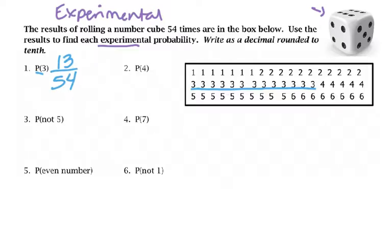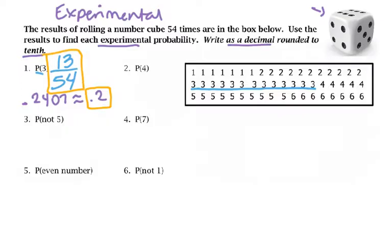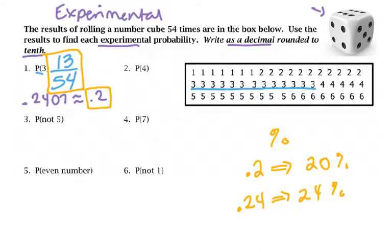There are a couple of ways to write probability depending on what the directions say. So 13 out of 54 is a reduced fraction. Another way is to use a calculator and do 13 divided by 54 and write it as a decimal. The tricky thing about decimals is figuring out where to round. If directions say round to the nearest tenth, then 0.2407 becomes approximately 0.2. The fraction 13/54 is exact; the decimal is approximate. Remember, if you're writing as a percent, 0.2 becomes 20%. If you'd rounded to the nearest hundredth, that would have been 24% — quite different, so be careful about rounding. Go with what the directions say; if they don't specify, it's better to be more accurate.